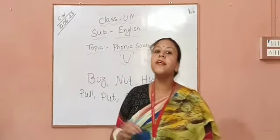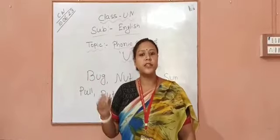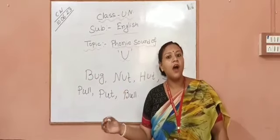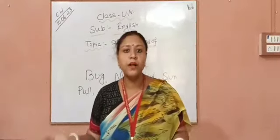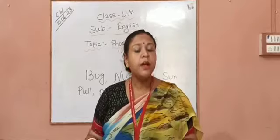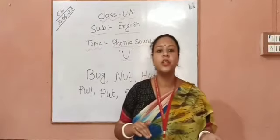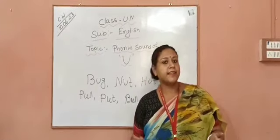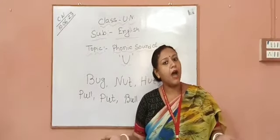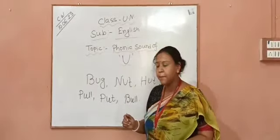The phonic sound of U is two types: 'oo' and 'uh'. When we pronounce some words with U, sometimes the pronunciation would be 'oo' and sometimes 'uh'. So let's take some examples.